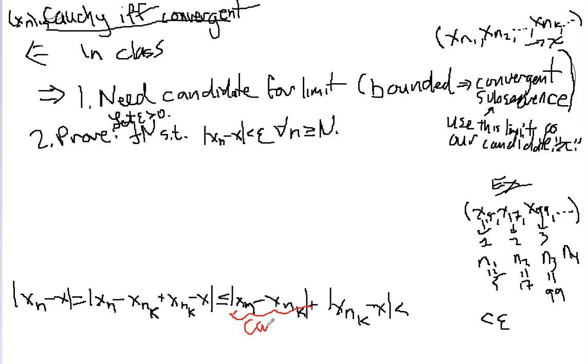This I can use as the fact that it's Cauchy, and this I can use the fact that the subsequence, x sub n sub little k, goes to x. So I can make that both of these are less than or equal to epsilon over 2 plus epsilon over 2 equals epsilon. So now it's only a matter of finding out what these n's and these n sub k's need to be.